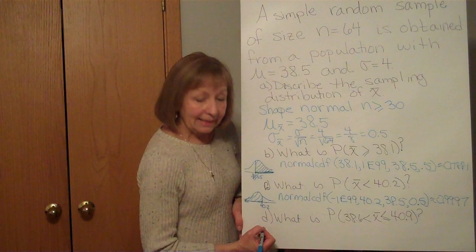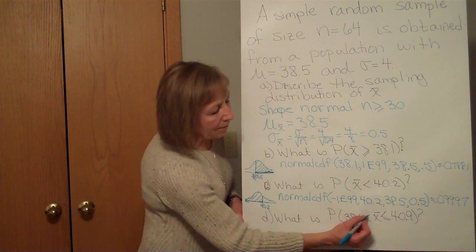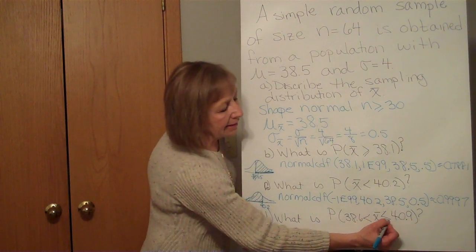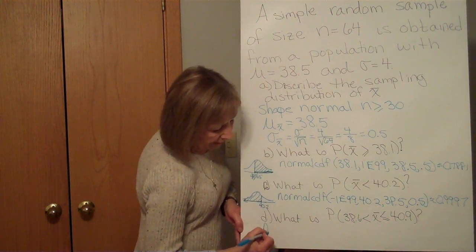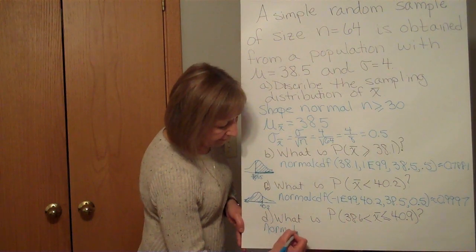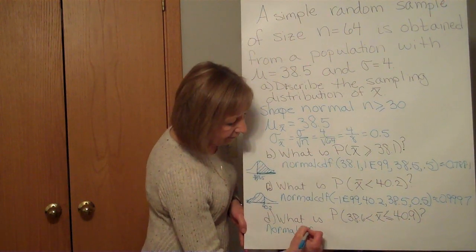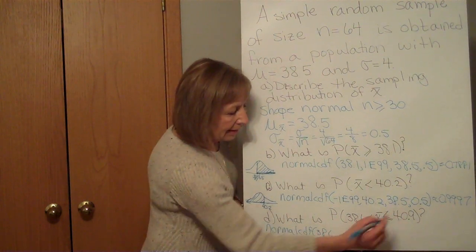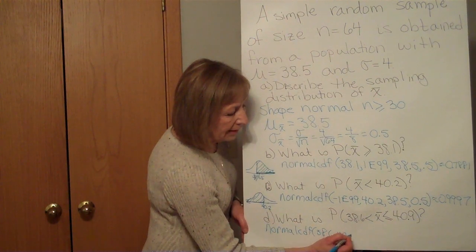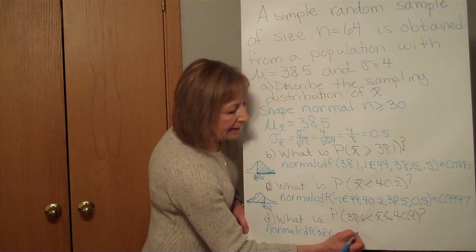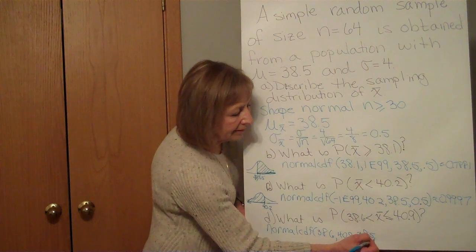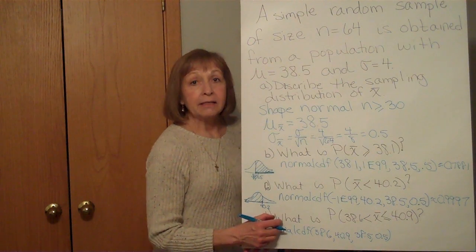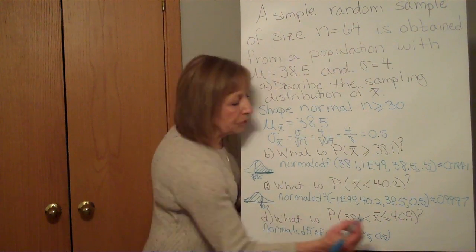Okay, and then lastly, what is the probability that my sample mean is between 38.6 and less than or equal to 40.9? So again we'll do normalcdf. The low is 38.6, the high is 40.9, the mean is 38.5, and the standard deviation is 0.5. And for that we get 0.4207.